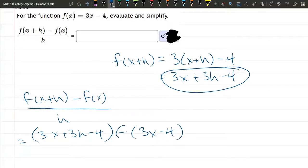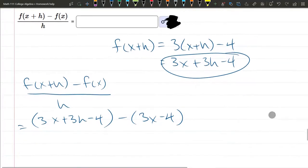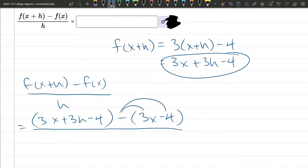It is important that you subtract 3x minus 4 and not just the 3x. That's why I'm using parentheses. And when I distribute the negative, that negative 4 becomes a plus 4, divided by h.